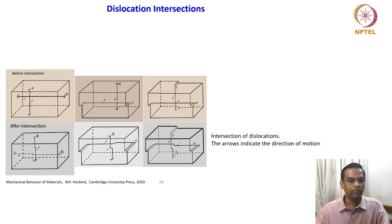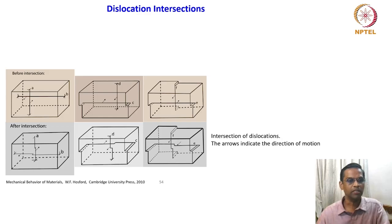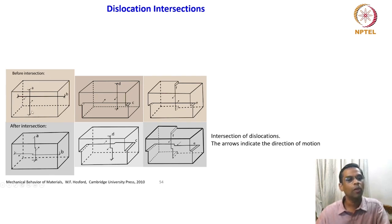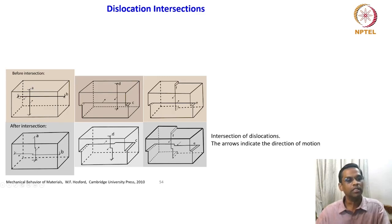This is the figure we were referring to. We will concentrate on each part — there are too many figures at once, so it is better to understand each figure first. The unit cell drawn here shows the situation before intersection, with two dislocation lines A and B drawn. Looking at A, you can clearly see it is an edge dislocation. For B as well, there is a positive edge dislocation at top and bottom.